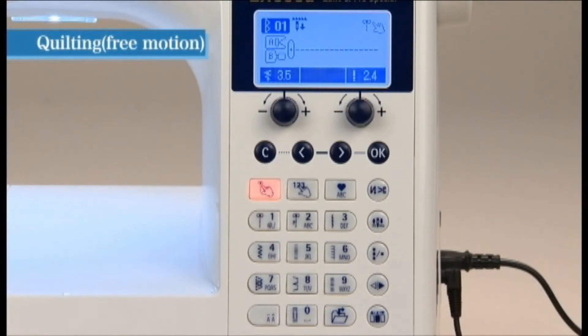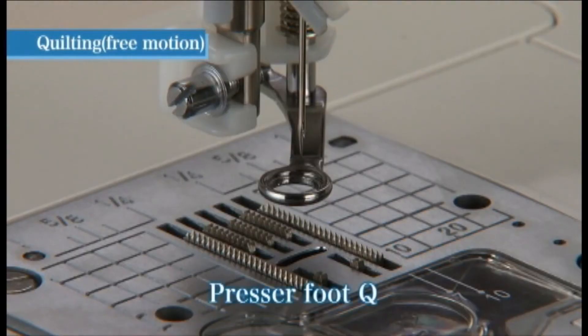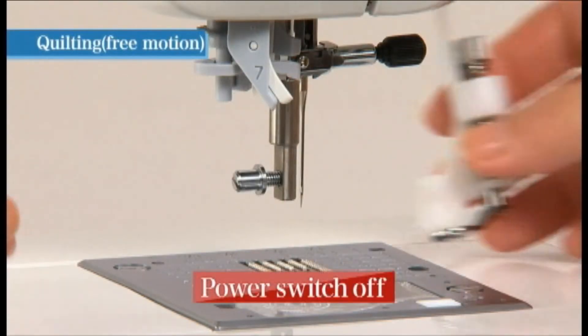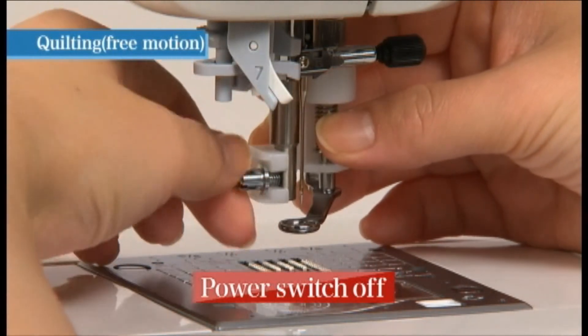Select direct pattern number one. Use the quilt presser foot Q as the presser foot. Attach the quilt presser foot and securely tighten the set screw for the presser foot holder.